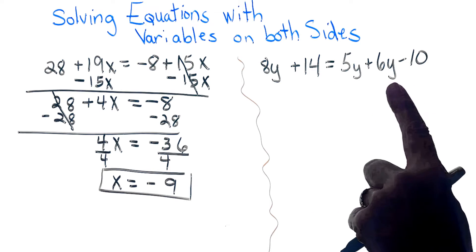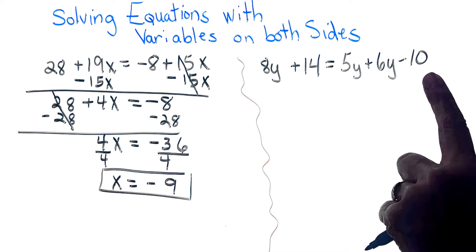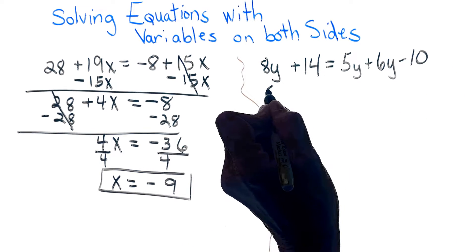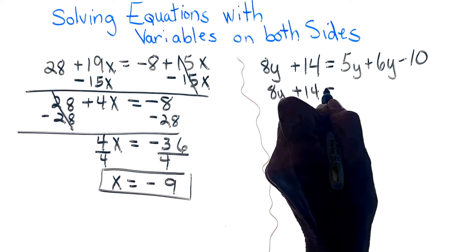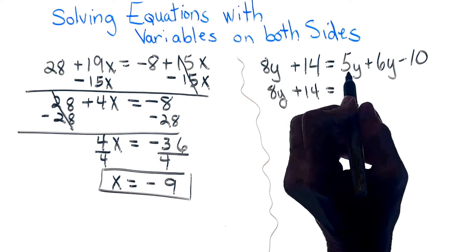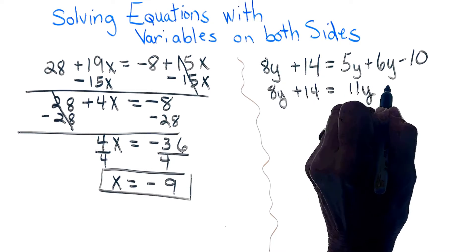But I can put my y's together on my right side. So I'm just going to copy the left side of the equation over again. 5y plus 6y is 11y minus 10.